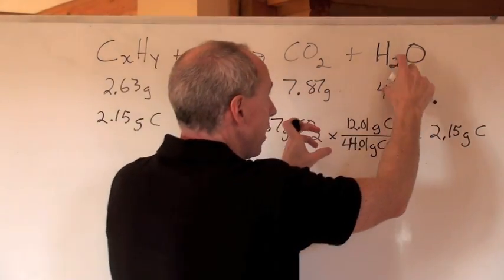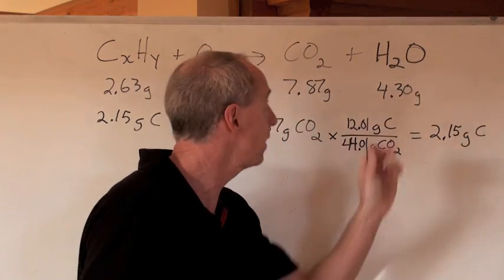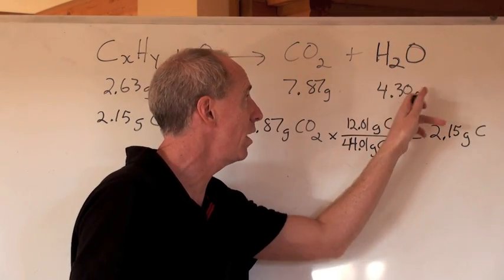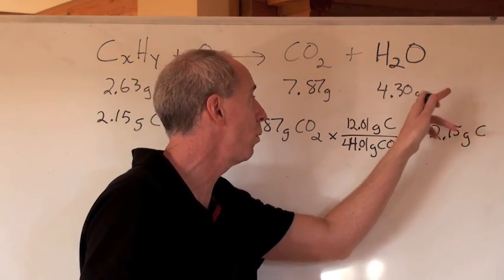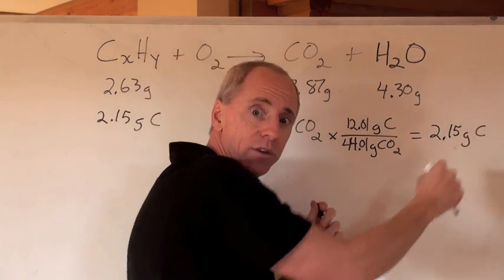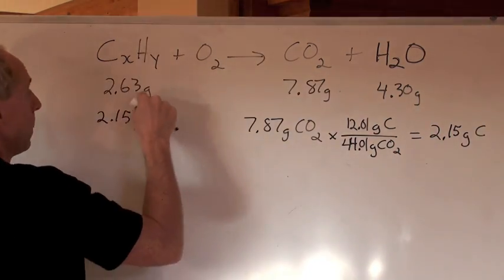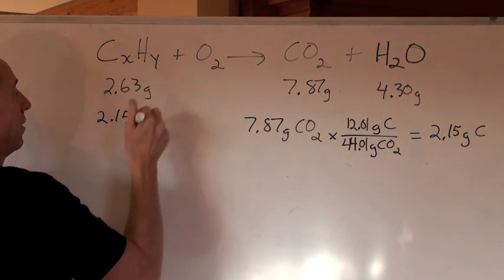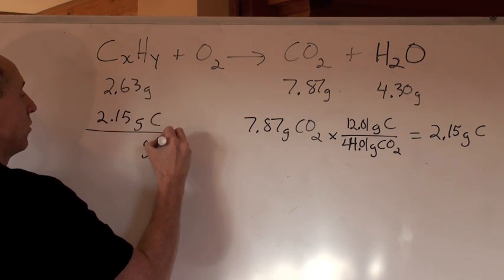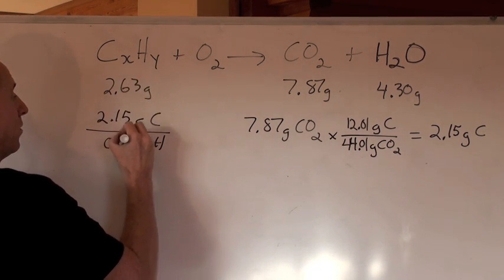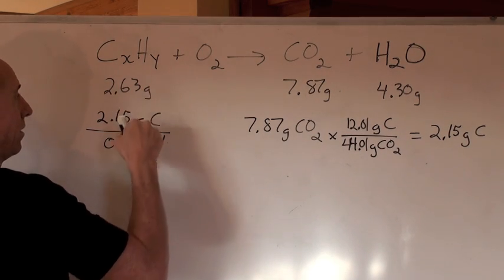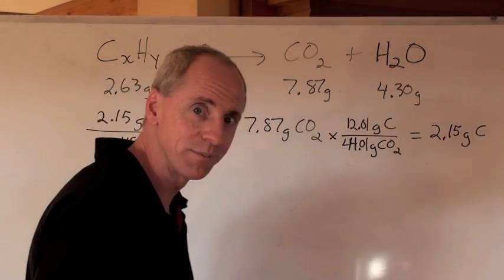You can do this calculation again for finding the mass of hydrogen that's in here by multiplying this by 1.01 over 18.02. Or, you can just say, well, if that's the grams of the carbon that's here, the grams of the hydrogen is going to be the difference in those two numbers, 0.48 grams of hydrogen.